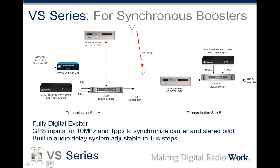Let's talk about the VS as a synchronous booster. This is synchronous FM where you have two stations with exactly the same content on exactly the same frequency with overlapping coverage — the idea is to minimize distortion in the overlap zone. To do that you have to synchronize every aspect of both transmitter signals. We provide GPS inputs for 10 MHz and one pulse per second to synchronize the carrier and the stereo pilot — not just the frequency but also the phase. Because it's a fully digital exciter, we can set the gain very exactly so both transmitters match. You can also adjust the built-in audio delay system so that in the interference zone the audio is synchronized, minimizing the effects of interference to essentially multipath.